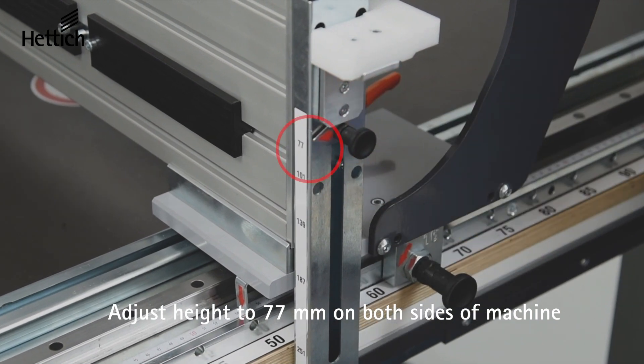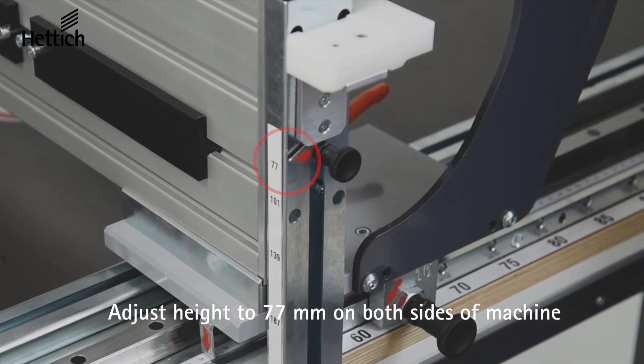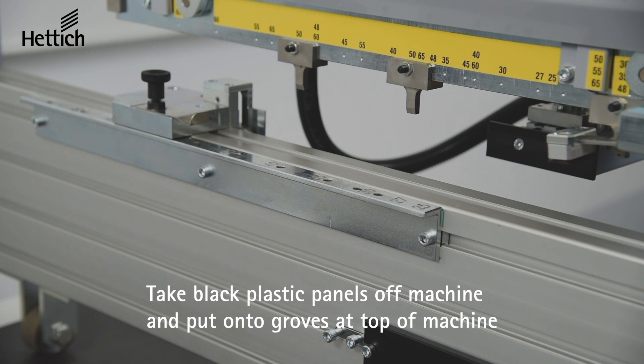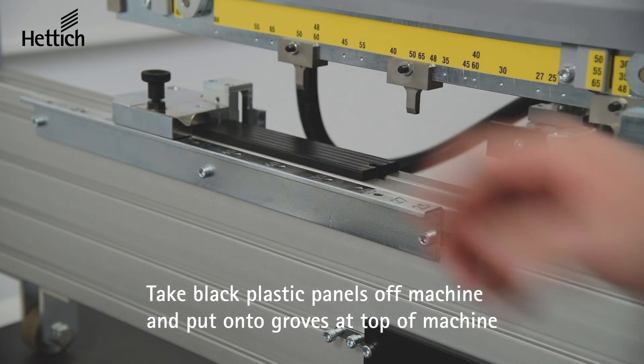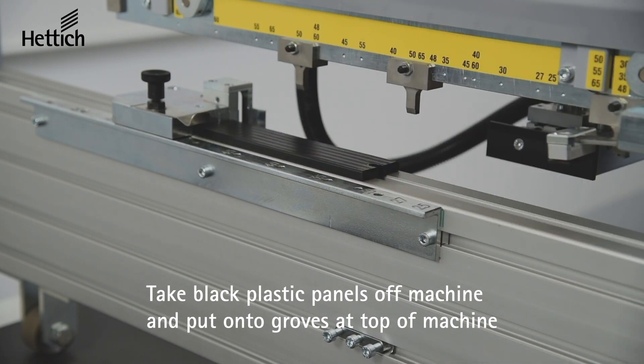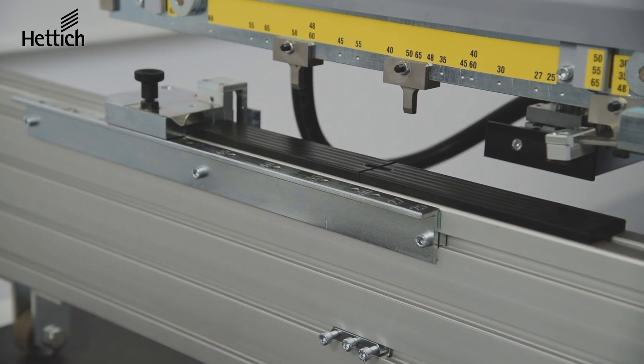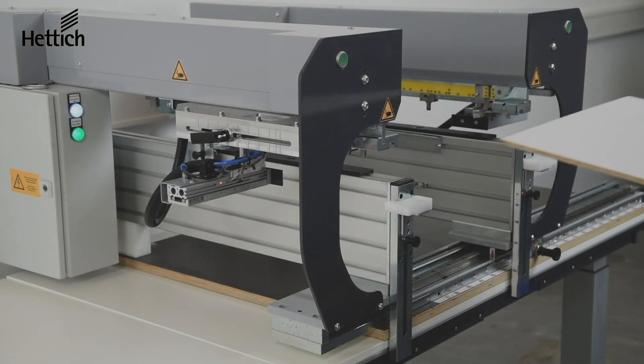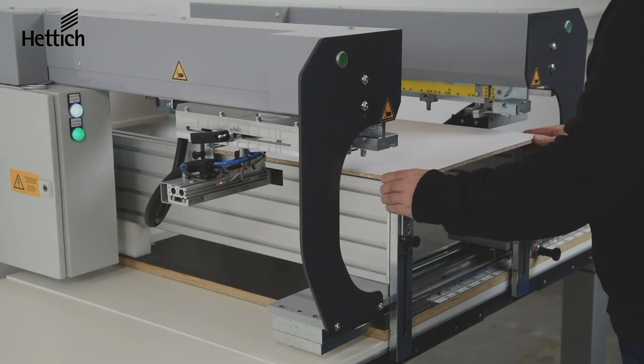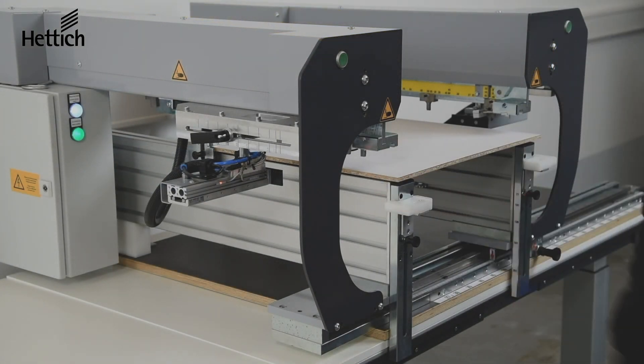You will notice two black panels on the side of the machine. Loosen the allen bolt to remove them and slide them onto the grooves where the bottom panel pins are. This must be done on both sides of the machine.